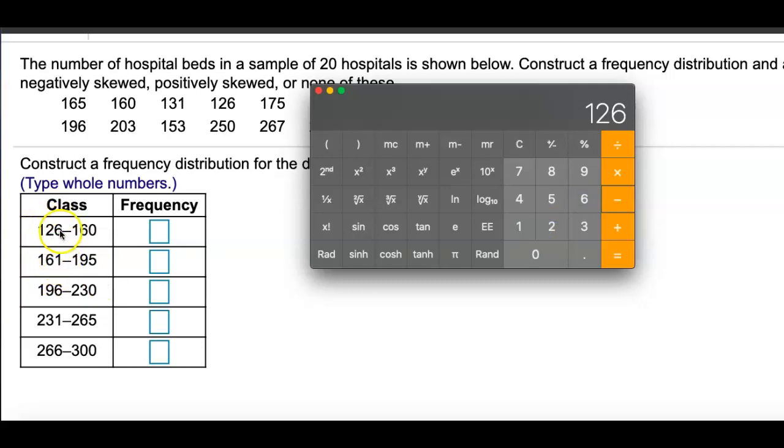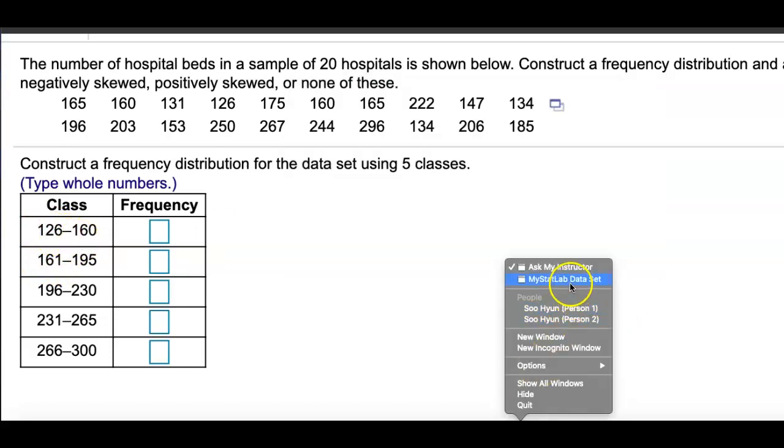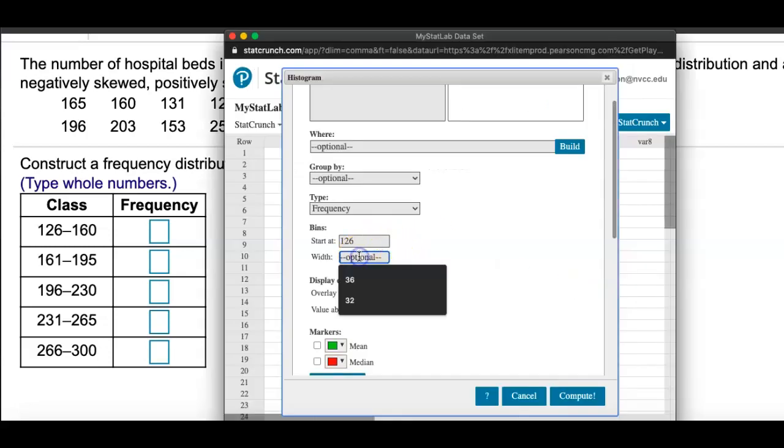161 minus 126, if I do that, I get 35. So I tell StatCrunch that I want the width to be 35. That's all I do, I'm going to go ahead and hit compute.